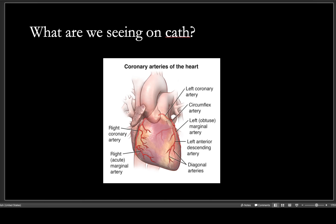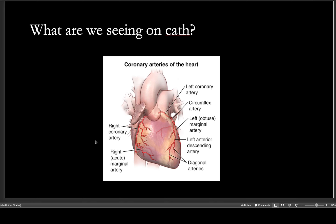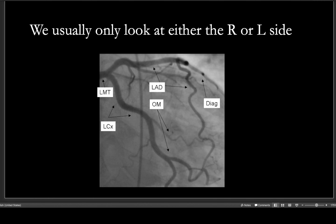When we do a cath, what are we really seeing? Everyone has seen the diagram of the heart with the right coronary, left coronary, LAD, and the circumflex wrapping around. When we're looking at it via fluoroscopy — AKA radioactive dye — it looks a little different. We'll typically see the LAD here and the left circumflex.